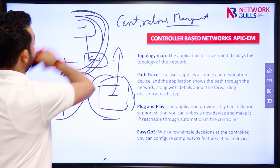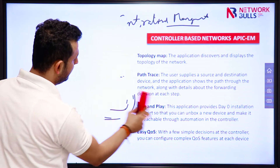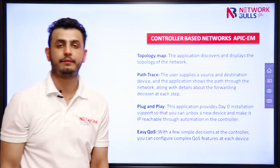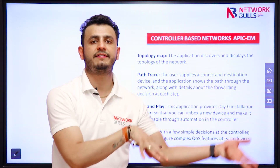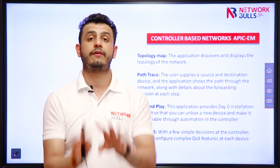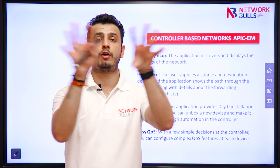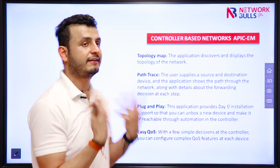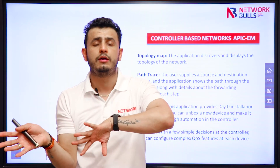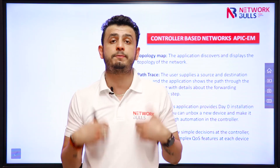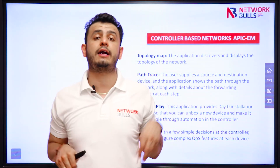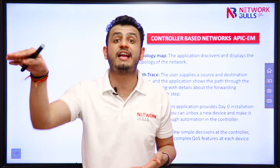What are the functions that we can do from the controller in case of controller based networks? First one is topology map. Once you have a controller and you have devices, you will register those devices to the controller, and the controller will give you a topology view showing how your topology looks. Second is path trace — you want to see from a source to a destination, for a particular type of application, which path is used and by what forwarding logic. You can see everything on the controller without going to each and every device.